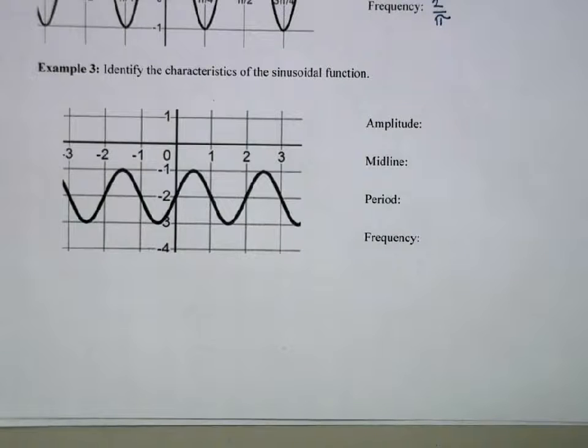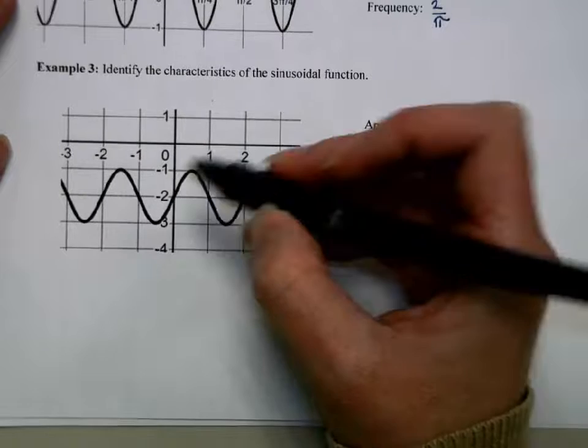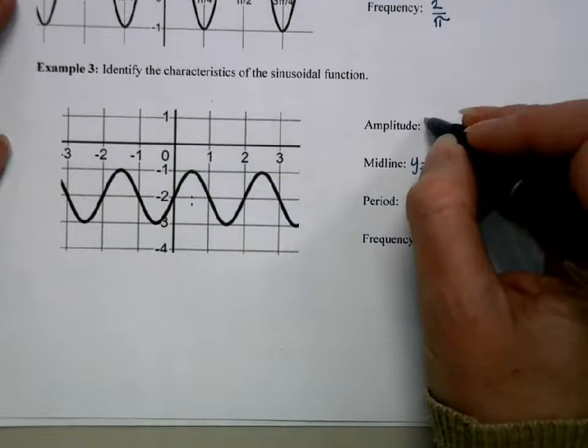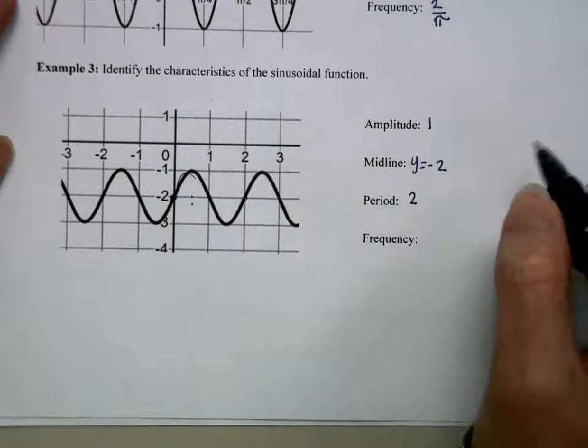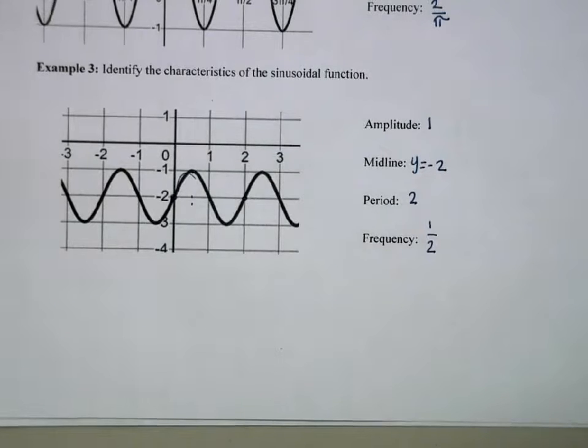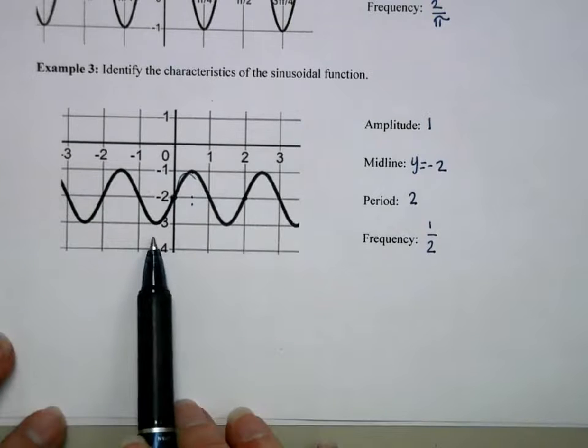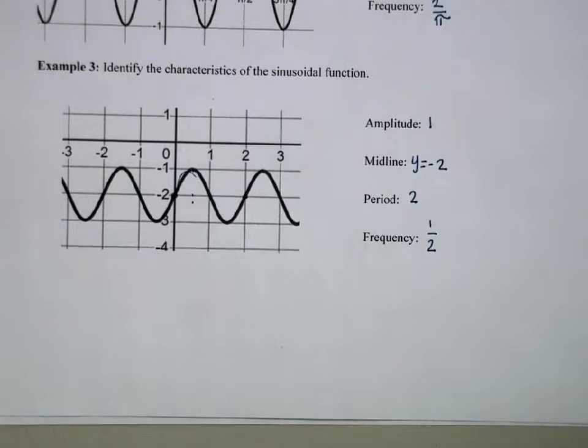Our final graph here. The midline is down at negative 2. The amplitude is 1. The period is 2, which means the frequency is 1 half. So we're practicing all of these things, building 2, being able to write the equations for these different sinusoidal graphs. This information will be absolutely critical in order to do that. Thank you for watching AP Precalculus Topic 3-4 and 3-5.